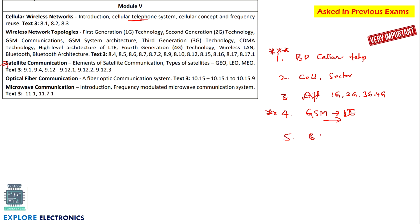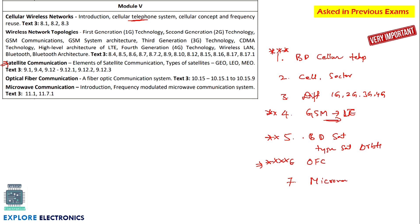Coming to satellite communication, one question will be there for sure — either the block diagram of satellite communication or the types of satellites with respect to their orbits. OFC (optical fiber communication) is very very important; the OFC block diagram is highly preferred. Microwave communication is also there. If you read the block diagrams of satellite communication, OFC, and microwave communication, you will get one question for sure.